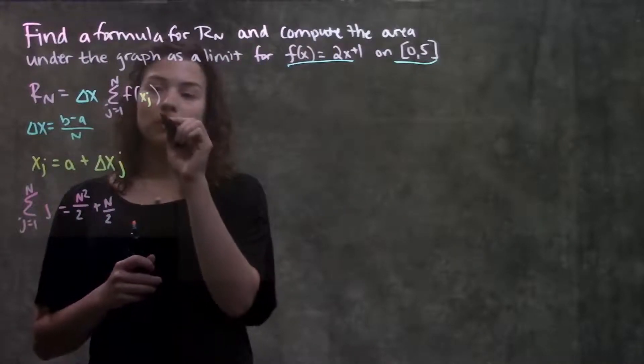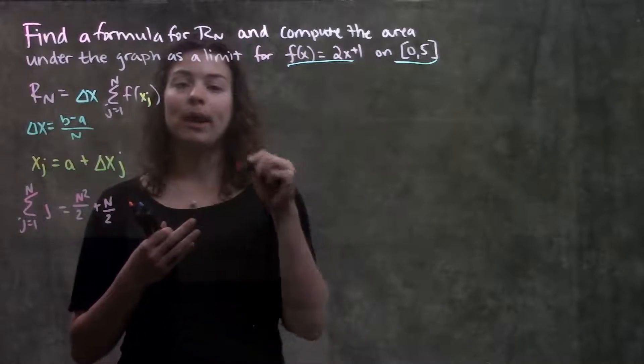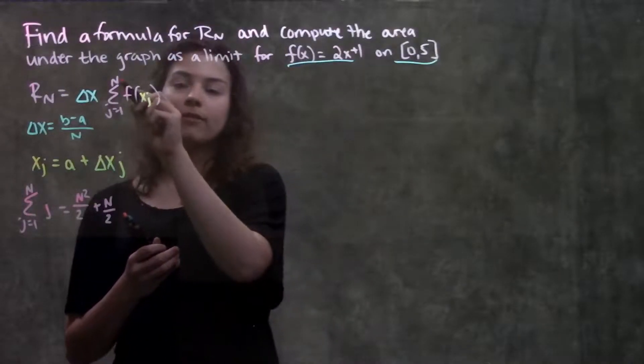For this problem, we're going to use this formula, find each of our parts, and find a general formula for the area underneath the graph with however many rectangles we want, with whatever number n.